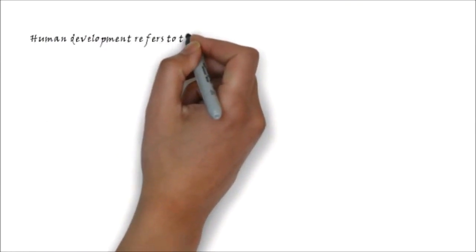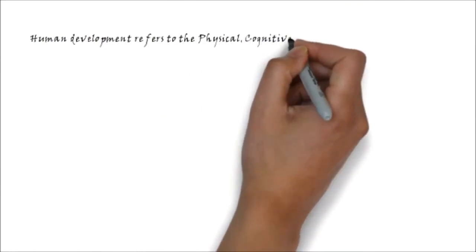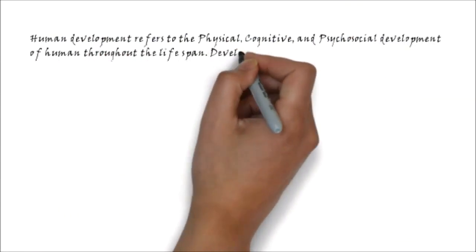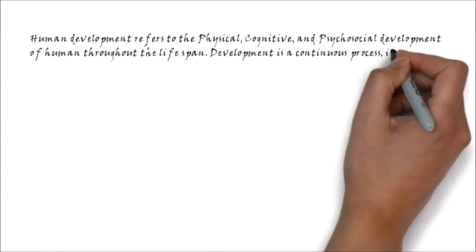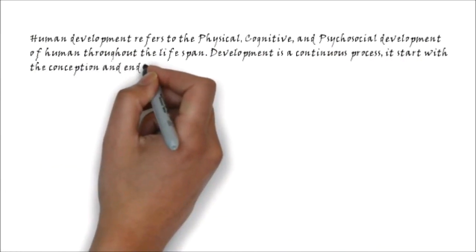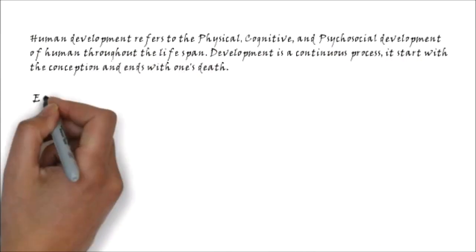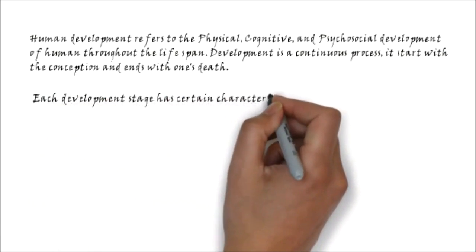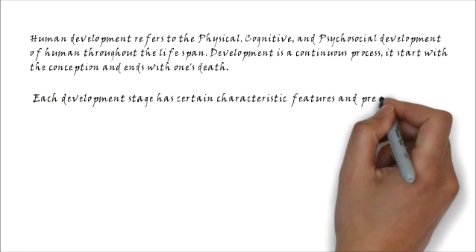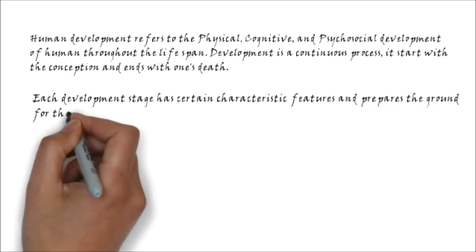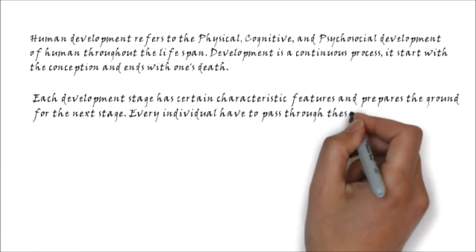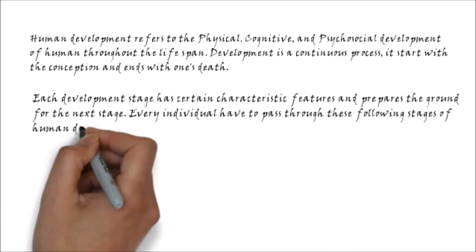Human development refers to the physical, cognitive, and psychosocial development of humans throughout the lifespan. Development is a continuous process — it starts with conception and ends with one's death. Each development stage has certain characteristic features and prepares the ground for the next stage. Every individual has to pass through these following stages of human development.